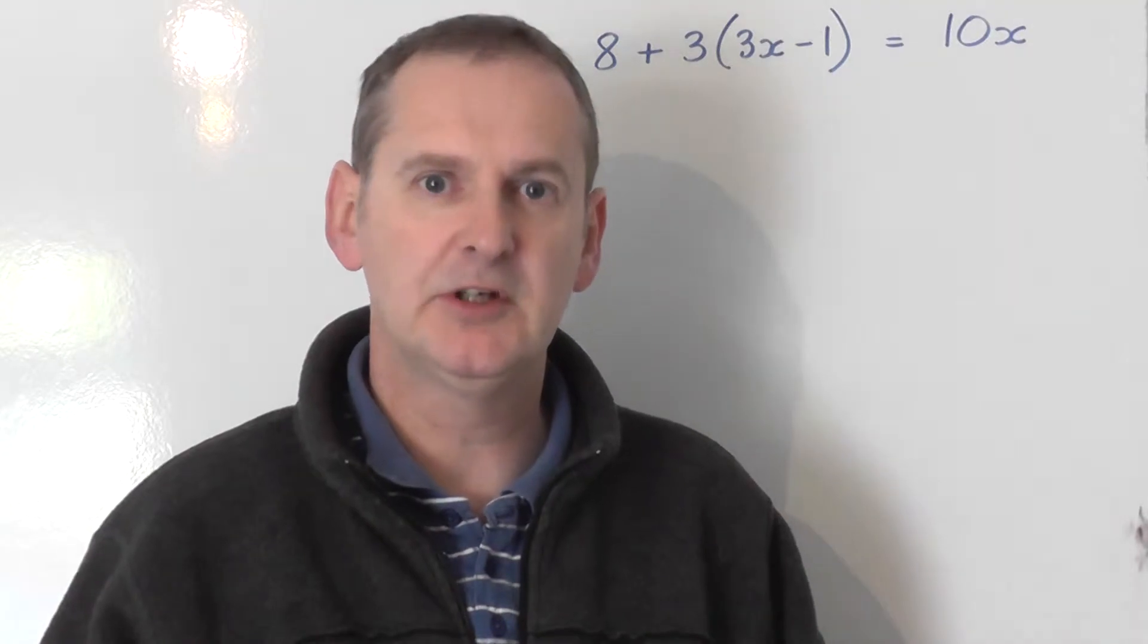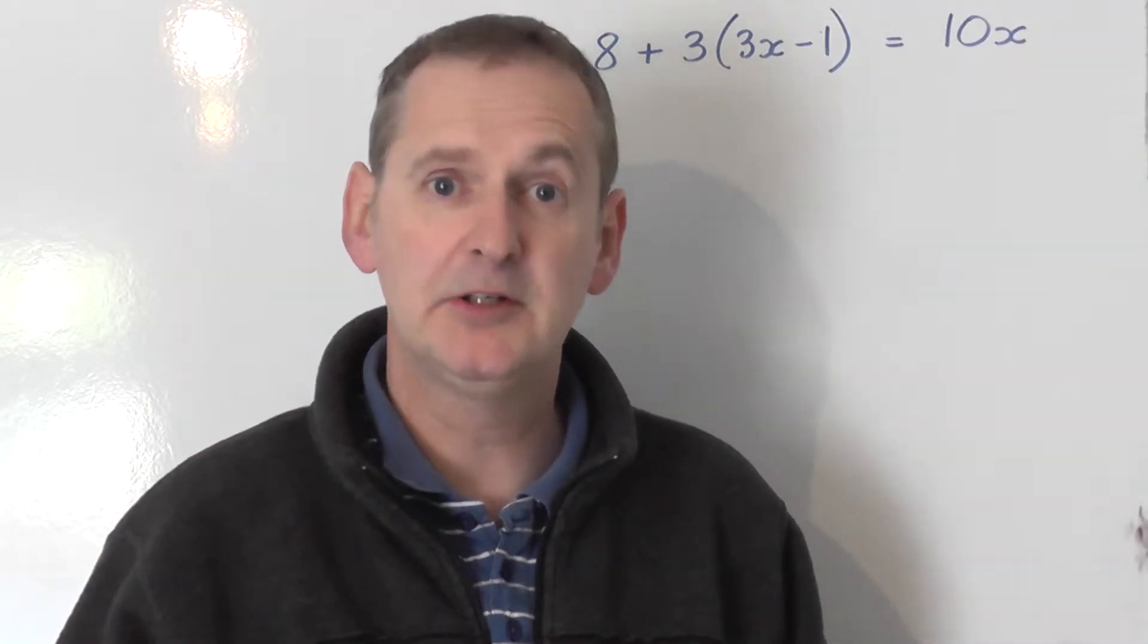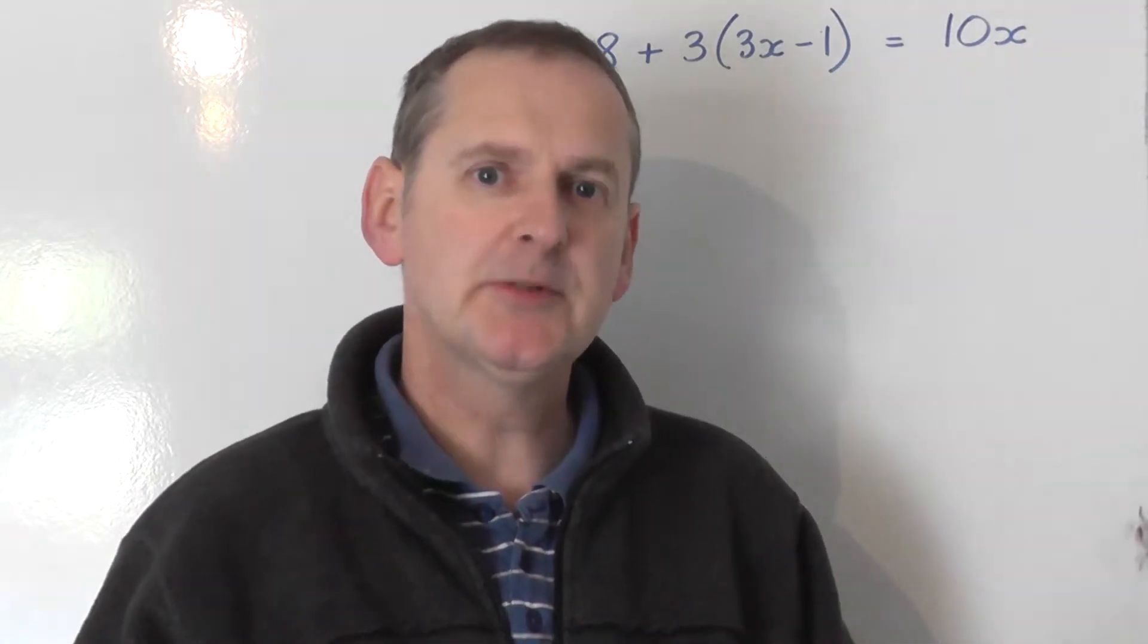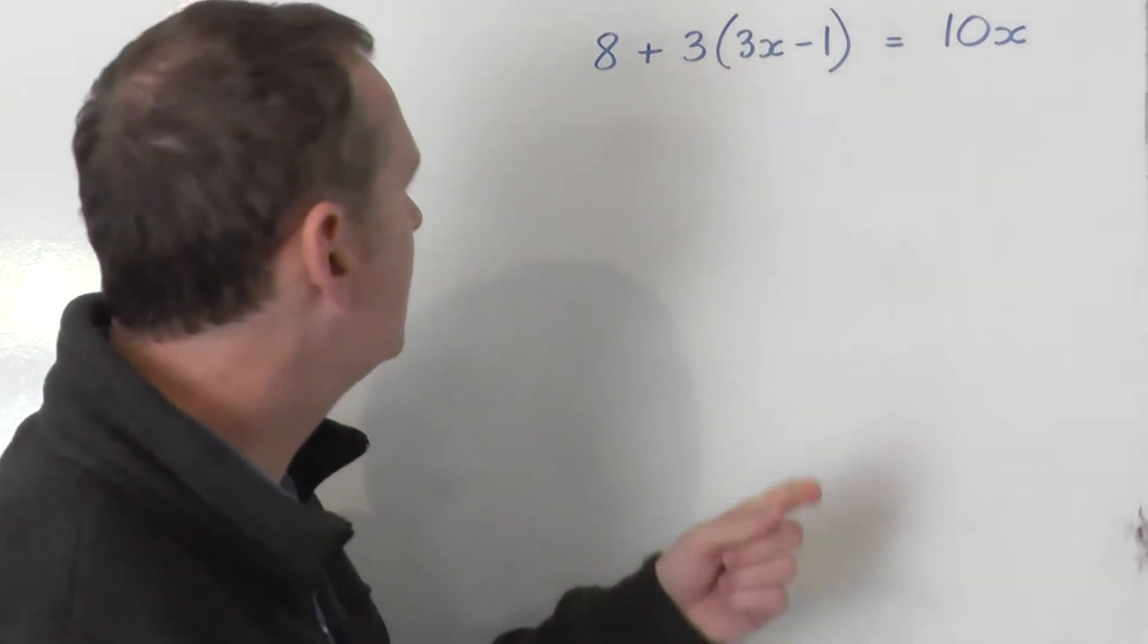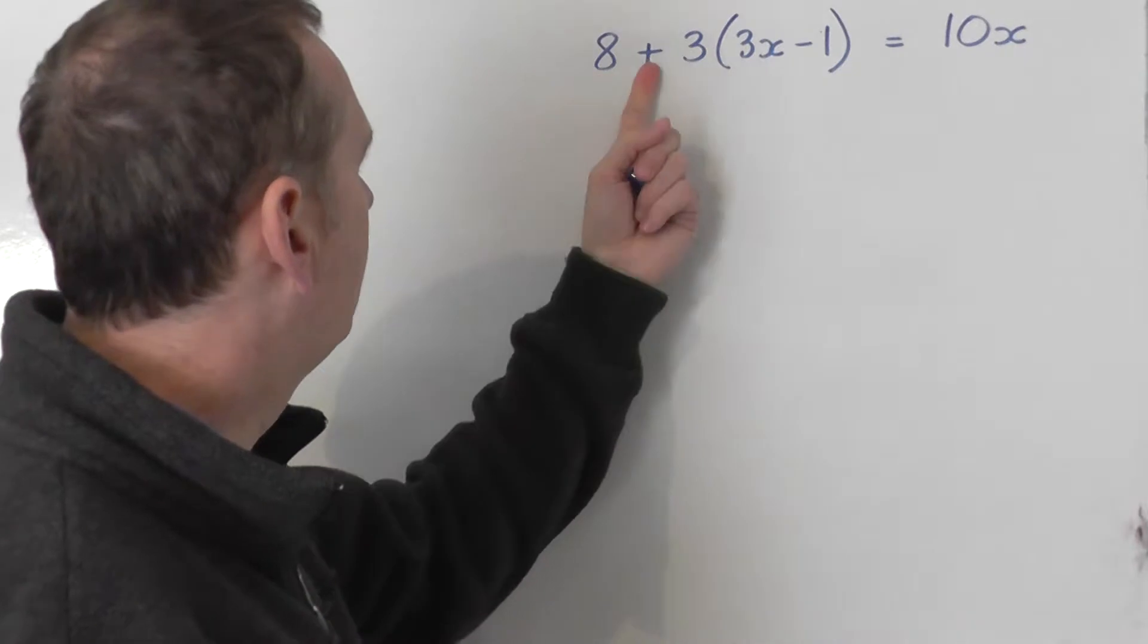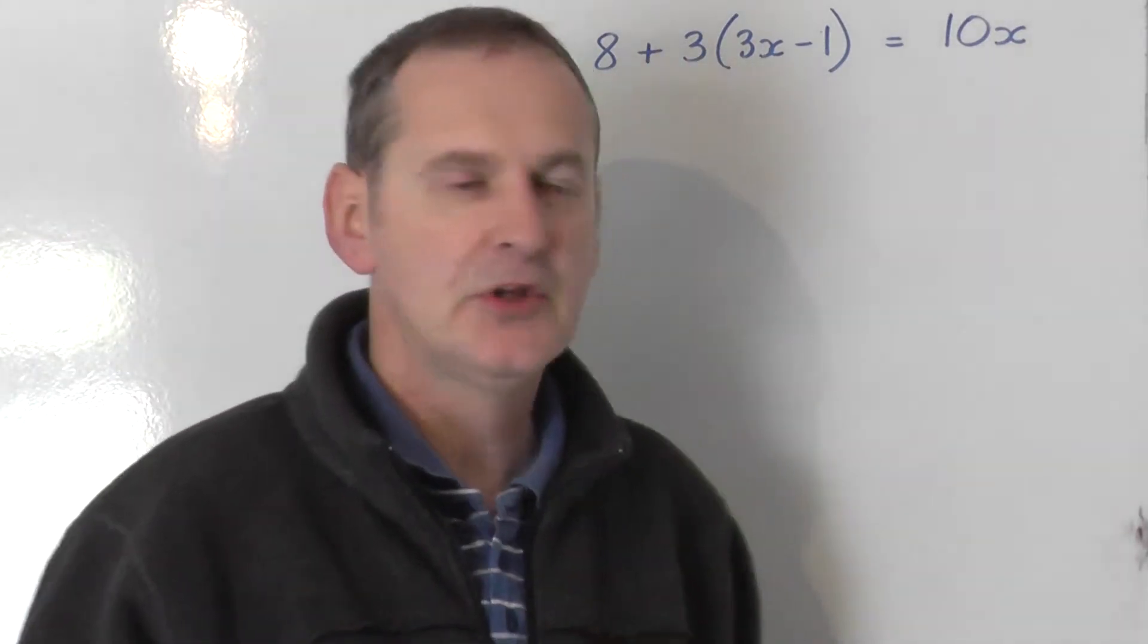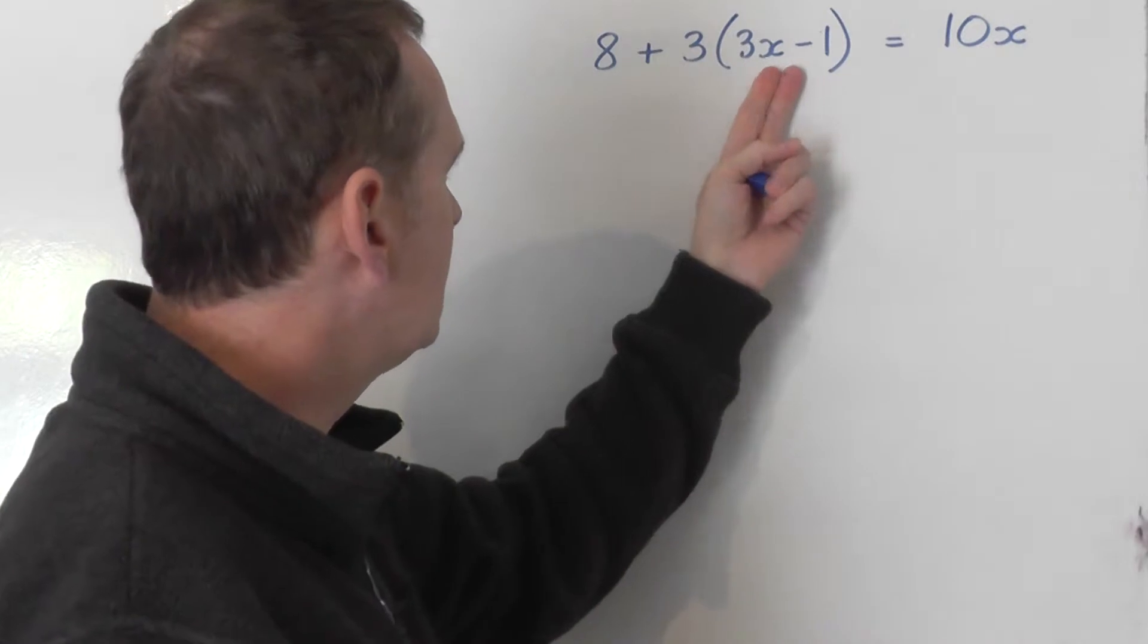The first job that you've got to do is get rid of the bracket and we're going to do that by expanding. Just be very careful in this particular example because on the left hand side what you've got is 8 plus 3 lots of the bracket. So we've only got 3 lots of the bracket.